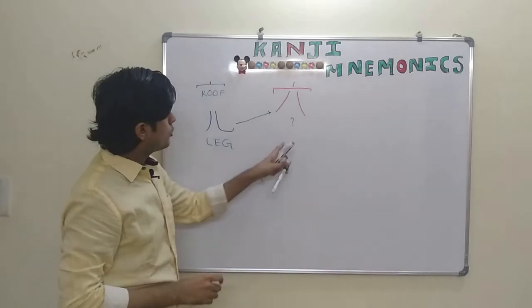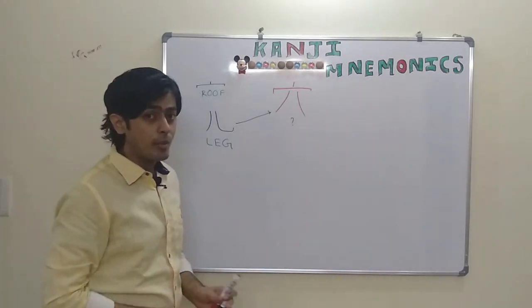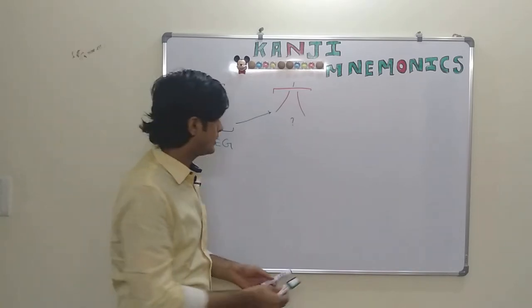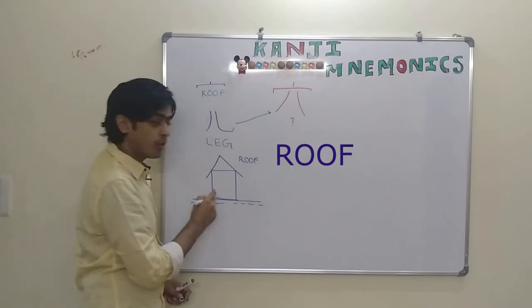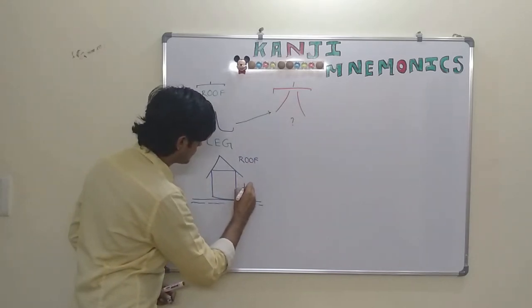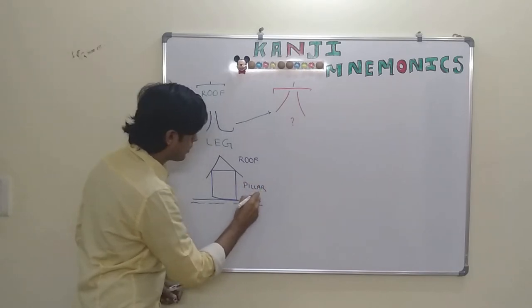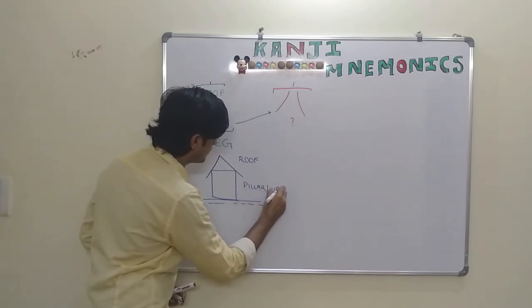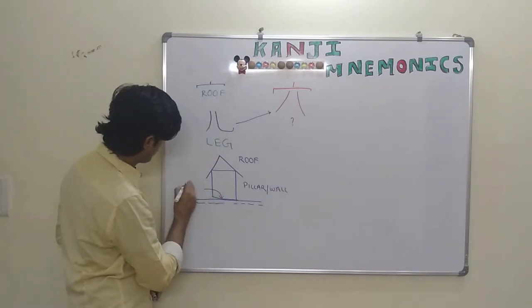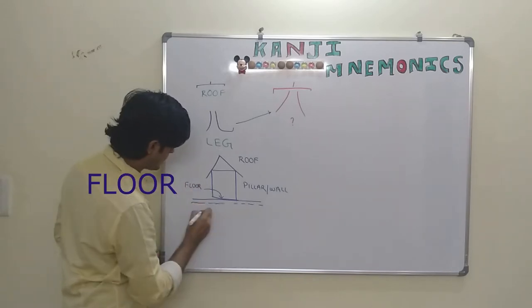To come to the literal meaning of this particular kanji, the mnemonic technique I used is this is the roof of the home and this is the pillar or wall. And this particular is the floor. And this part is the ground.